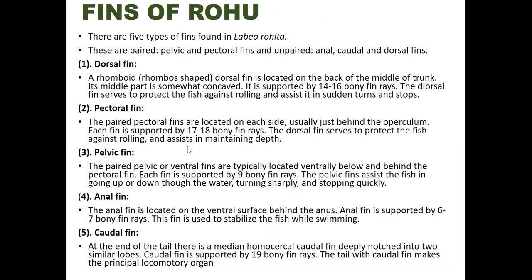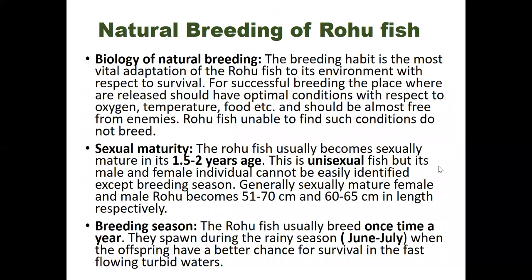The natural breeding biology and breeding habit is the most vital adaptation of the Rui fish. For successful breeding, the place where eggs are released should have optimal conditions regarding oxygen, temperature, food, and must be almost free of enemies. If they cannot find such conditions, they do not breed and destroy their eggs within their body.